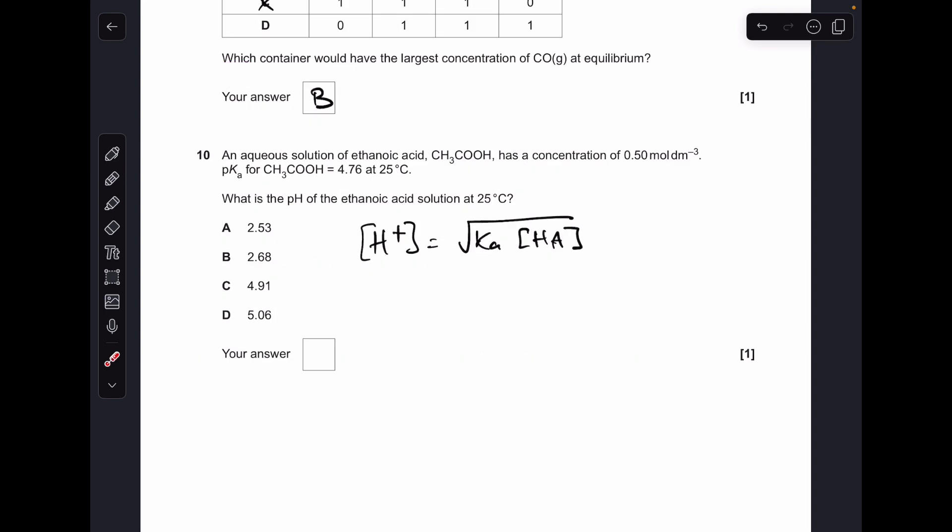Moving on to number 10. So pH of a weak acid calculation. The H plus concentration for a weak monoprotic acid is calculated using the square root of the Ka multiplied by the original acid concentration. I'll call this the square root of Ka-ha equation. So you'll notice they haven't given us the Ka, they've given us the pKa. So the Ka for the acid is 10 to the minus pKa, multiplying that by the concentration, so we minus log that and you get 2.53. So A is the answer.